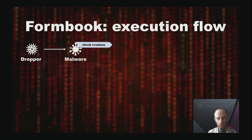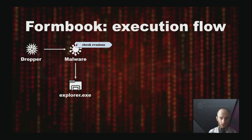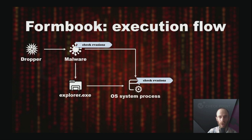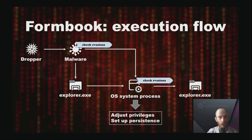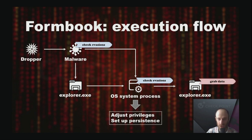The execution flow starts with the dropper, which unpacks the malware. At this stage, evasions are checked for the first time. Then the first injection to the explorer process is performed. After this, the malware makes an injection to a random system process, where evasions are checked for the second time. At this step, privileges are adjusted and persistence is set up. Then the injection to the explorer process is performed for a second time. Only at this point is data grabbed and communication with the command and control server established.